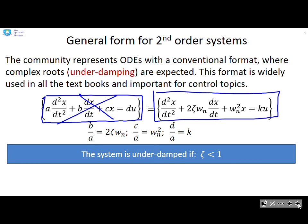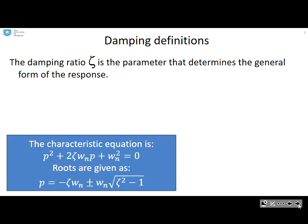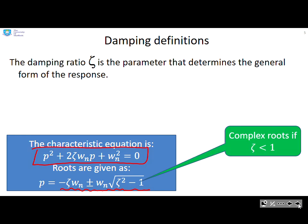Now the system is underdamped if ζ is less than 1, and you can see this zeta term appears in the second coefficient there. The system is underdamped if the characteristic equation has complex roots. So in fact those two statements are equivalent as you will see. If we look at the characteristic equation and find the roots, you'll see the roots are given as p = -ζωₙ ± ωₙ√(ζ²-1). The key point is you have complex roots if the damping ratio is less than 1, because this term here in the square root will be negative if ζ is less than 1. So you'll end up with complex roots.